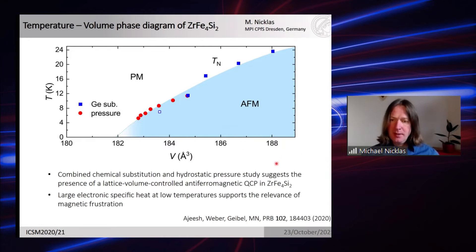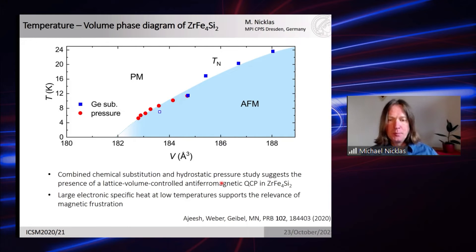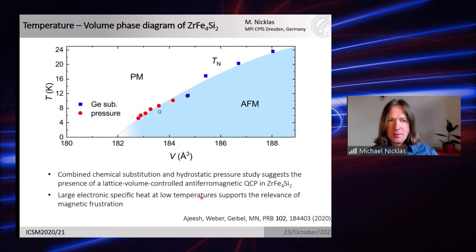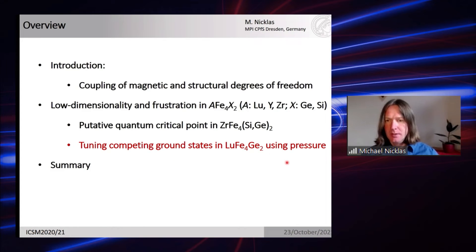We have identified ZrFe4Si2 as an interesting material for studying an antiferromagnetic quantum critical point in a frustrated, almost one-dimensional system. This suggests further investigations, including efforts to obtain single-crystalline material and high-quality measurements down to lower temperatures. The large electronic specific heat at low temperatures confirms strong correlations, making it quite unusual compared to other transition metal compounds. Let me now come to the second part: tuning of competing ground states in LuFe4Ge2.